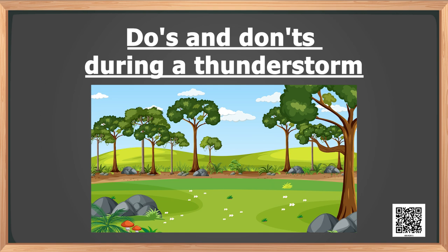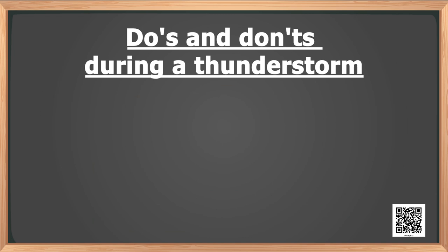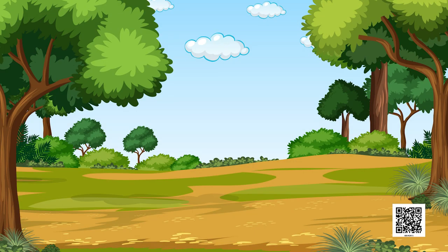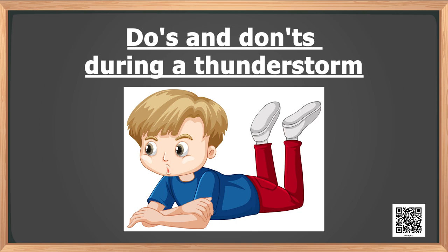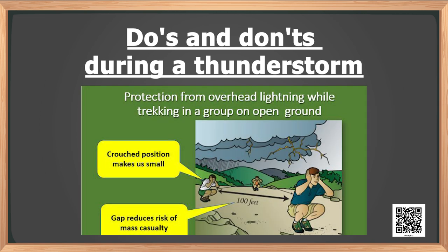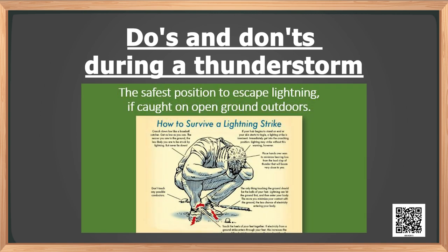If we are in a forest, we should take shelter under shorter trees and avoid big and taller trees. If there is no shelter available and we are in an open field, we should stay away from all trees, poles, and metal objects. We should not lie on the ground; instead we should squat low on the ground, place our hands on our knees with our head between our hands, because this position makes us the smallest target to be struck.